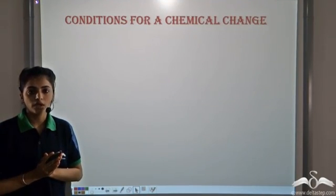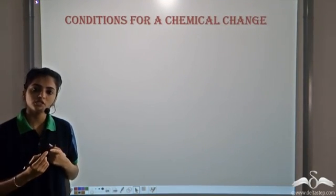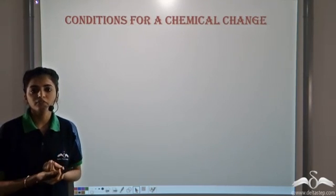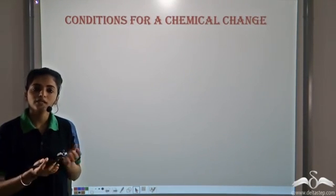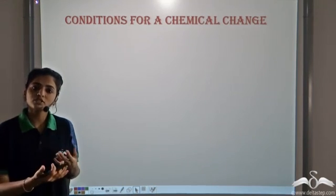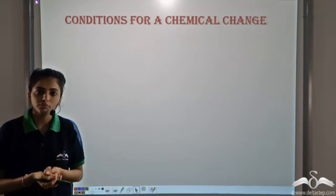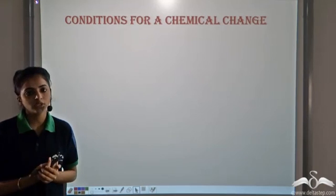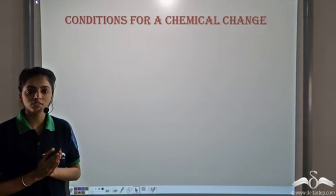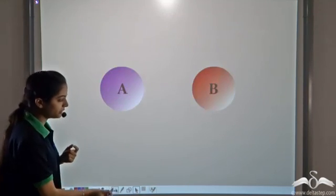There are some conditions required for a chemical reaction or a chemical change to take place. For example, if we have any two reactants and they have to undergo a chemical reaction, can they just react on their own? Say we keep the two reactants on a table — will they react? No, they will not. There are always some conditions required for a chemical reaction to take place.